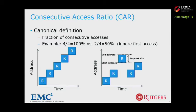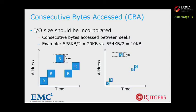The previous metric is based on I/O consecutiveness, but we think I/O size is also important. Intuitively, a trace with more consecutive bytes accessed is more sequential than one with smaller accesses, because more data is processed before a random seek. The two figures show essentially the same access pattern, but the consecutive access ratio fails to distinguish them. If we assume the I/O size on the left is 8K and on the right is 4K, then the consecutive bytes accessed score would be twice as large on the left. We use the abbreviation CBA to represent consecutive bytes accessed.